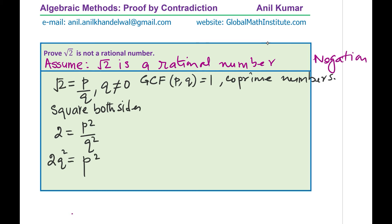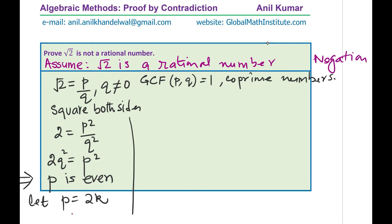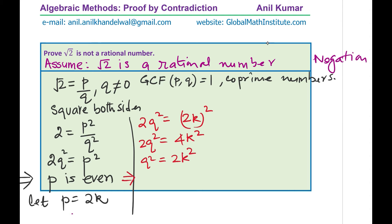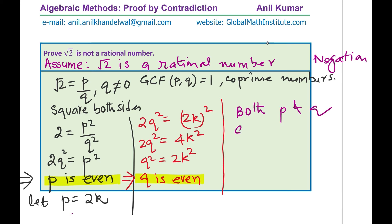Cross-multiplying gives us 2q squared equals p squared. Since 2 times any number is even, this implies that p squared is even, and therefore p is even. Since p is even, I can write p as 2 times some number — let p equal 2k. Rewriting with p as 2k, we get 2q squared equals (2k) squared, which gives 2q squared equals 4k squared. Dividing by 2: q squared equals 2k squared. Since q squared is 2 times some number, that means q is also even.